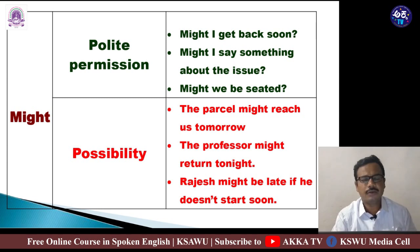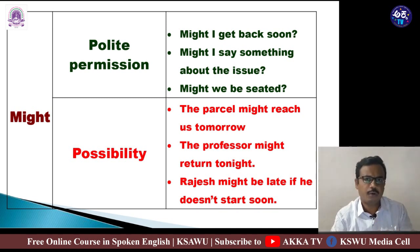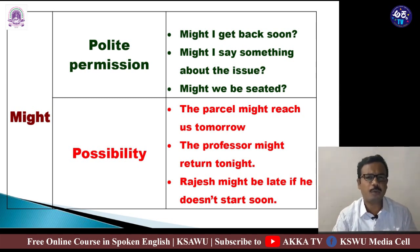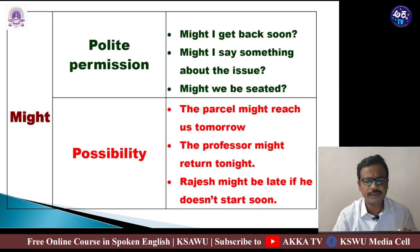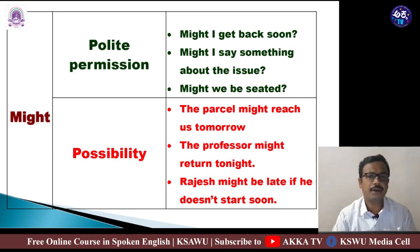When it comes to possibility with 'might', the probability is less compared to 'may'. 'It may rain tonight' shows higher possibility, while 'It might rain tonight' shows less possibility. 'The parcel might reach tomorrow' — there is only a little possibility. 'The professor might return tonight' — we are not sure. 'Rajesh might be late if he doesn't start soon' — the person is not very certain.